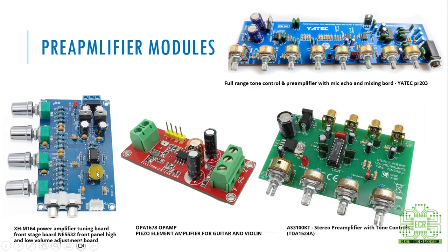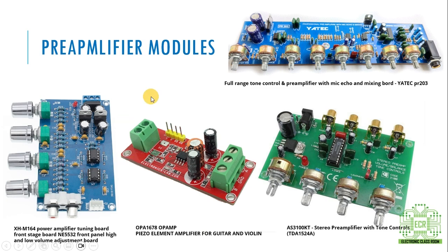This is the XHM 1080p Amplified Tuning Board and Front Stage Board. This is the preamplifier. This is the tone control. This is the low volume management module. This is the input and output — this is the preamplifier. This is the base of OPA. This is the guitar and violin preamplifier. This is the AS32KT. This is the tone control.